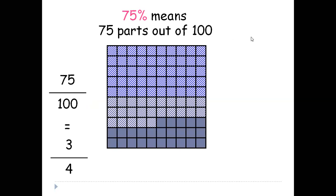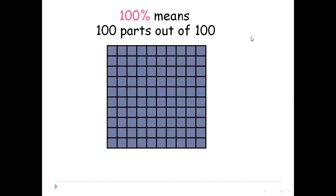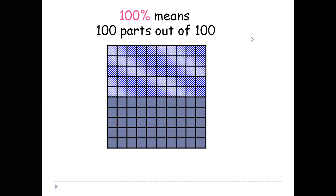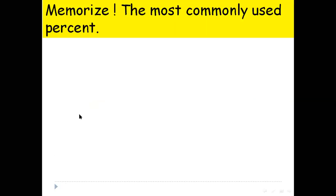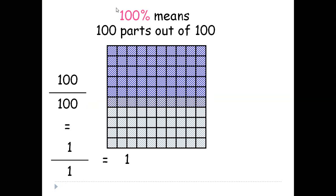Now look at 100 percent. 100 percent means 100 parts out of 100 parts, so it's 100 out of 100, which is 1 over 1 — that's actually 1 whole. So in this grid, all 100 small squares are shaded to represent 100 percent, which equals 1 whole.